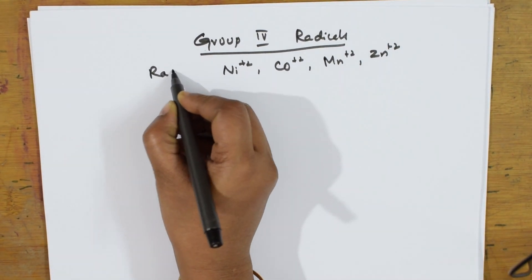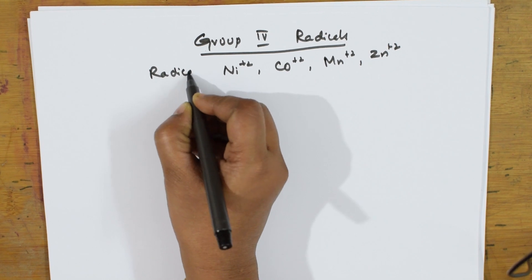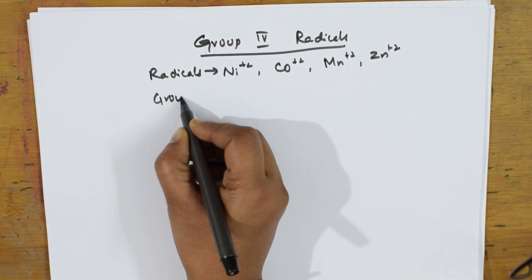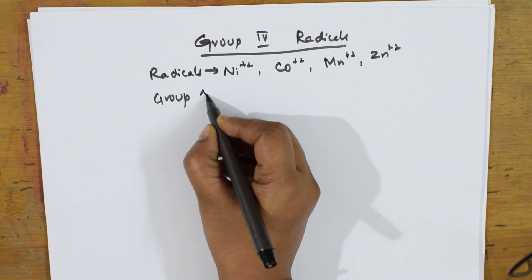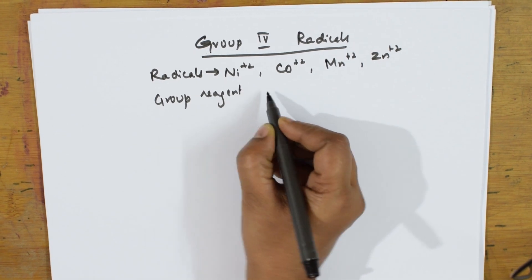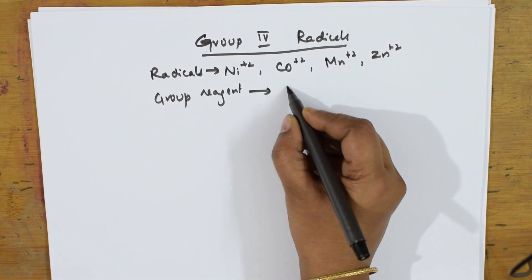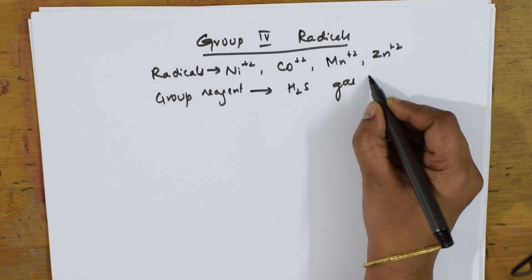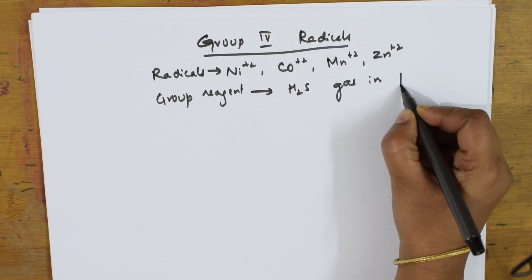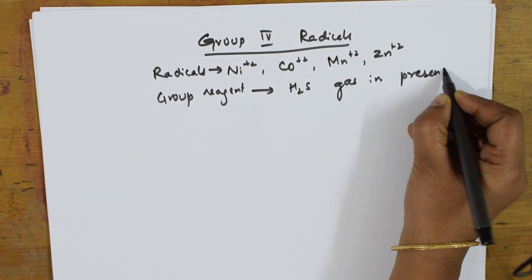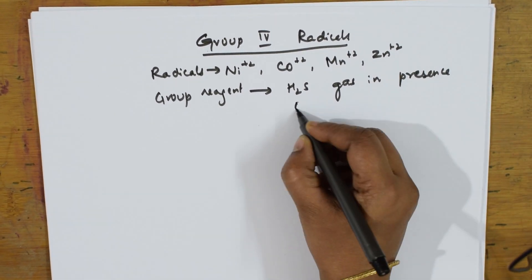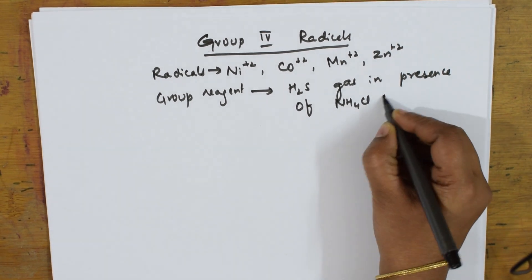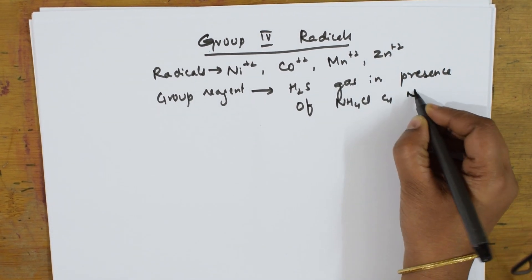Let us write these radicals and identify the group reagent. The group reagent is H2S gas in the presence of NH4Cl and ammonium hydroxide.